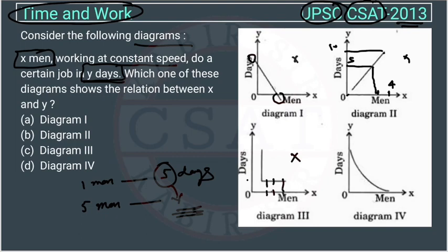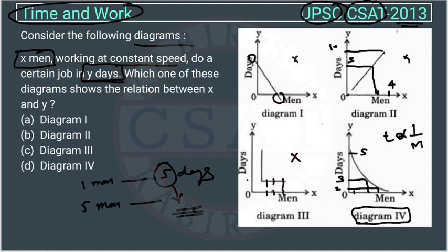So the answer is diagram four — Option D. In this diagram, suppose one man is working and it takes five days. When two men work, it takes three days. When four men work, it takes two days. As we increase the number of men, the time decreases. They are inversely proportional, so this is the correct figure.